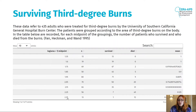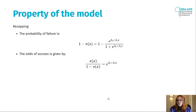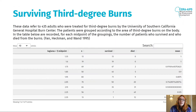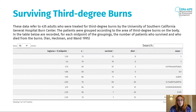For the last group, which has the largest burn area, 13 people had that burn but only one of them survived. The last column shows the mean survival rate: for the first group, 13 over 13 equals 1. But for the last group, where only one person survived, 1 over 13 is approximately 0.08.